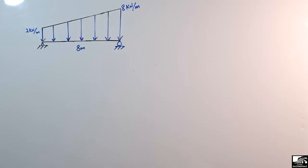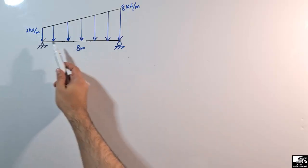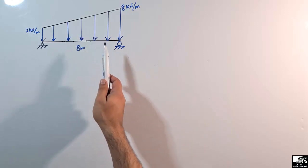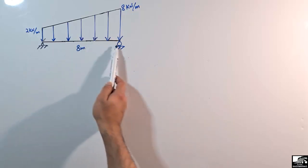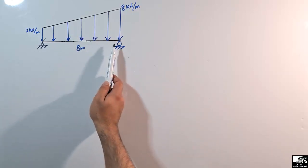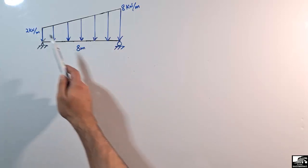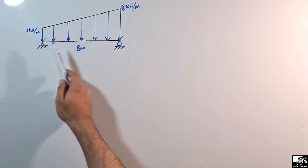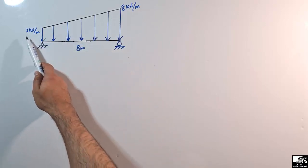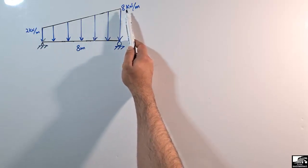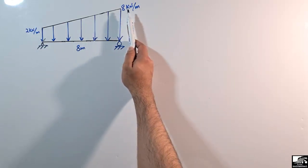Welcome back to the Seven Engineering YouTube channel. Please subscribe for daily videos. Today we are going to convert a uniformly varying load, or trapezoidal load, into a pointed or concentrated load. Consider a simply supported beam with a hinge and roller support. The total length of the beam is 8 meters, and there is a trapezoidal load acting on it with a starting magnitude of 2 kN/m and an end magnitude of 8 kN/m.